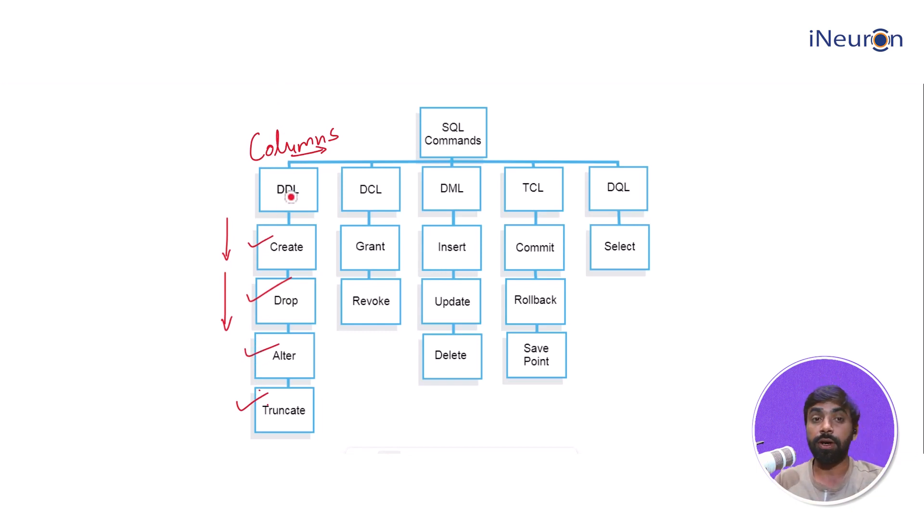So these commands work on a column level, but columns are not really the data. Our data is majorly rows, the values. And that's where DML comes in. DML actually is working on rows, so you insert rows, that is insert data in the columns. You update the already inserted data, or you want to delete certain data because it's outdated or probably it's wrong or whatever might be the reason. These are the three commands which help you take care of your rows, which is the real data in your database.